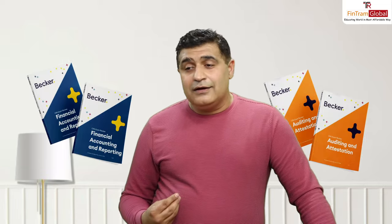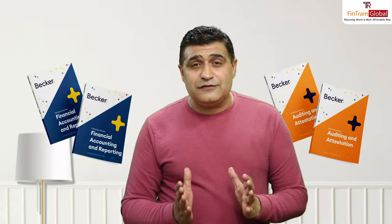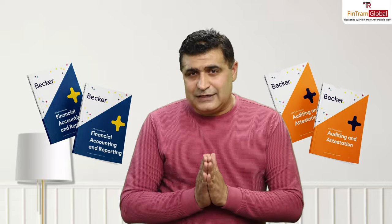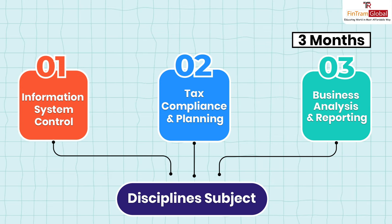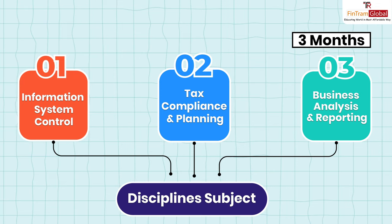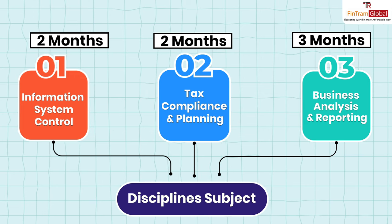From the timing standpoint, FAR and Audit take a really good amount of time — at least three to four months at your hand when appearing for the exam. Regulation, with a lot of content moved from Regulation to TCP, now takes about two to two and a half months — less in volume but more in depth. For discipline subjects: BAR takes about three months; ISC is more quick at two months; and TCP also takes about two months to prepare and sit for the exam.